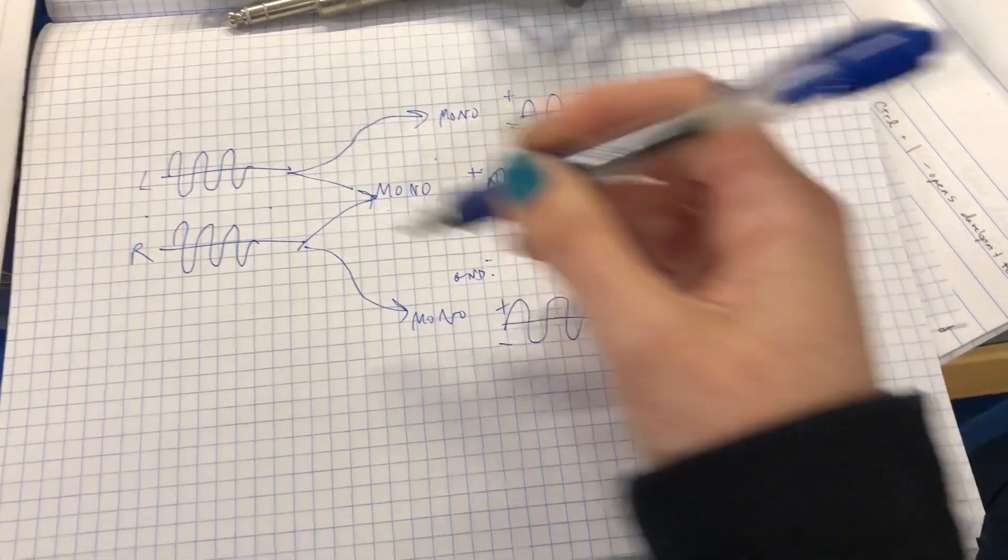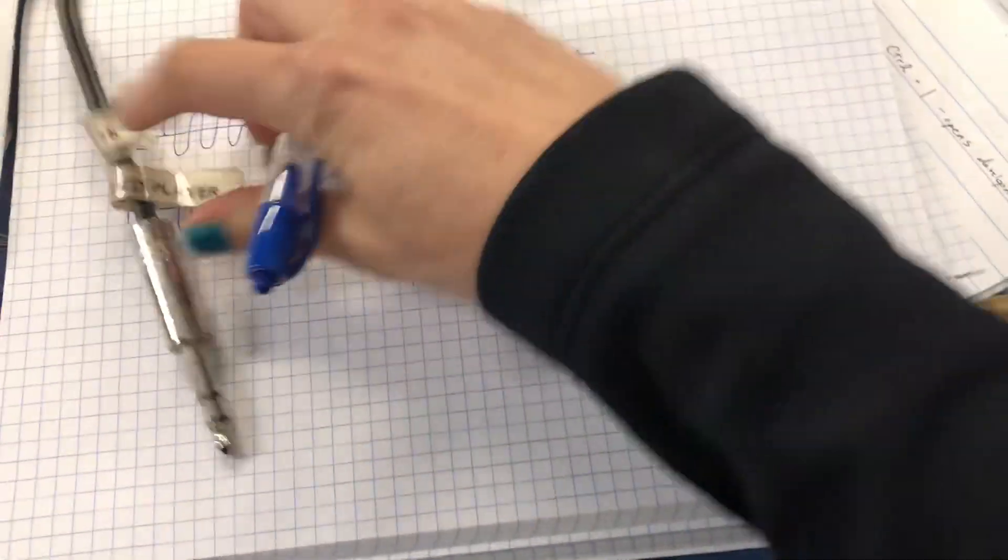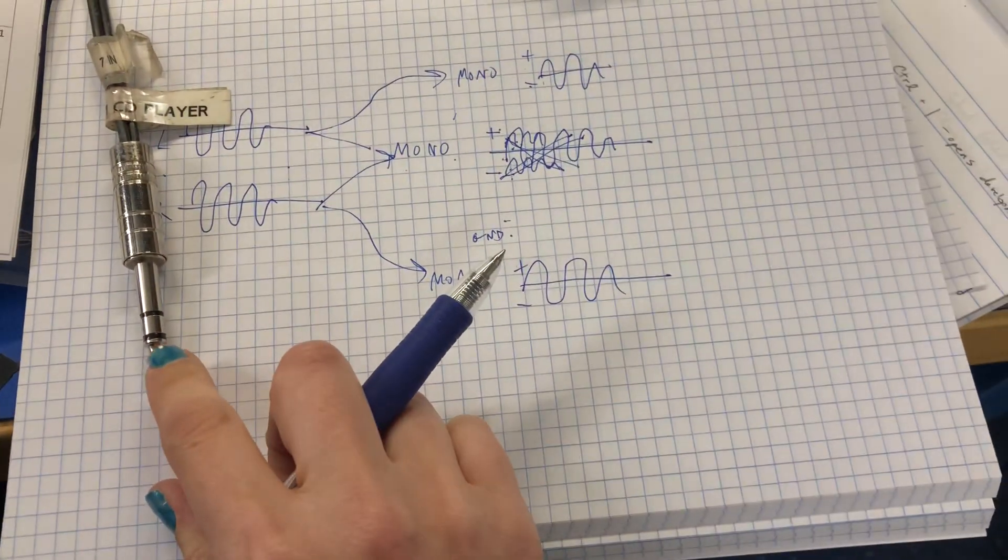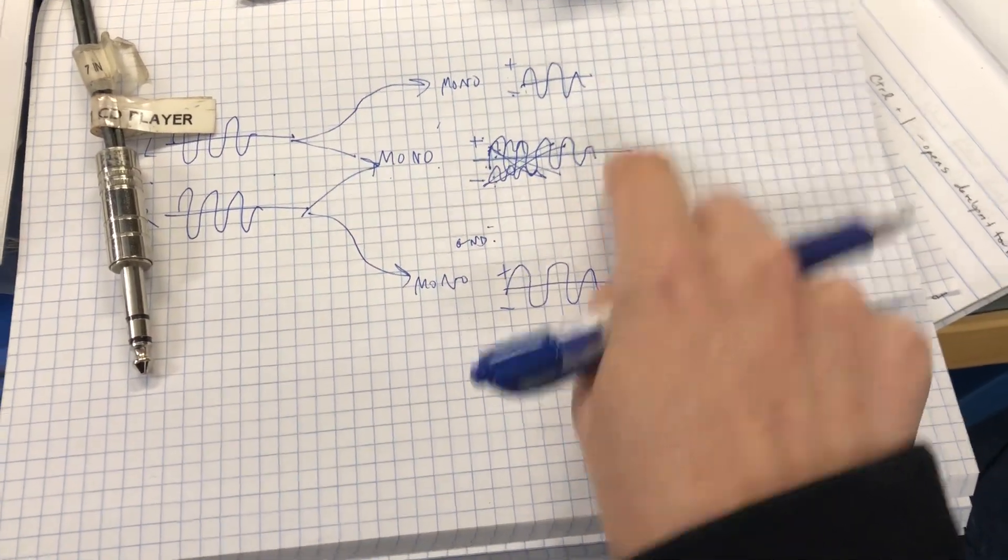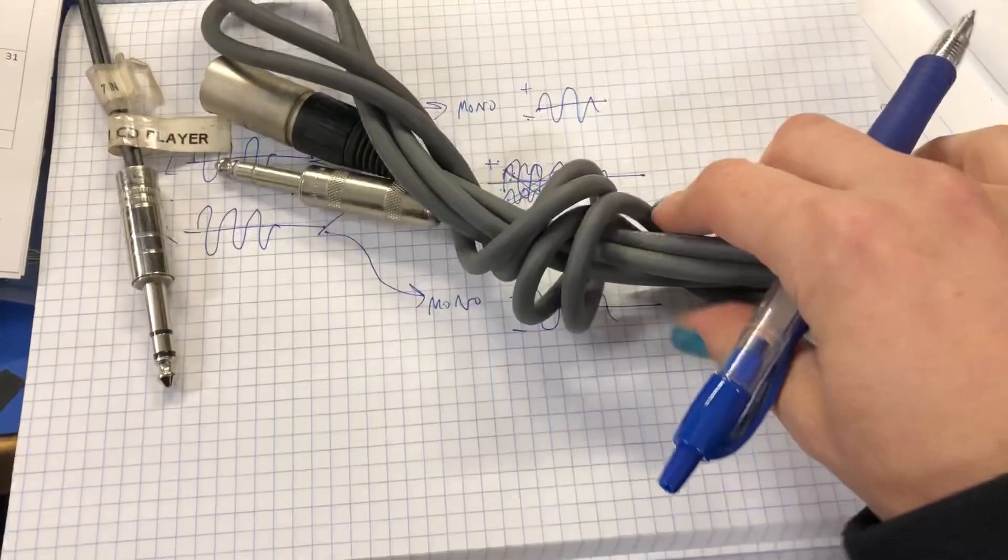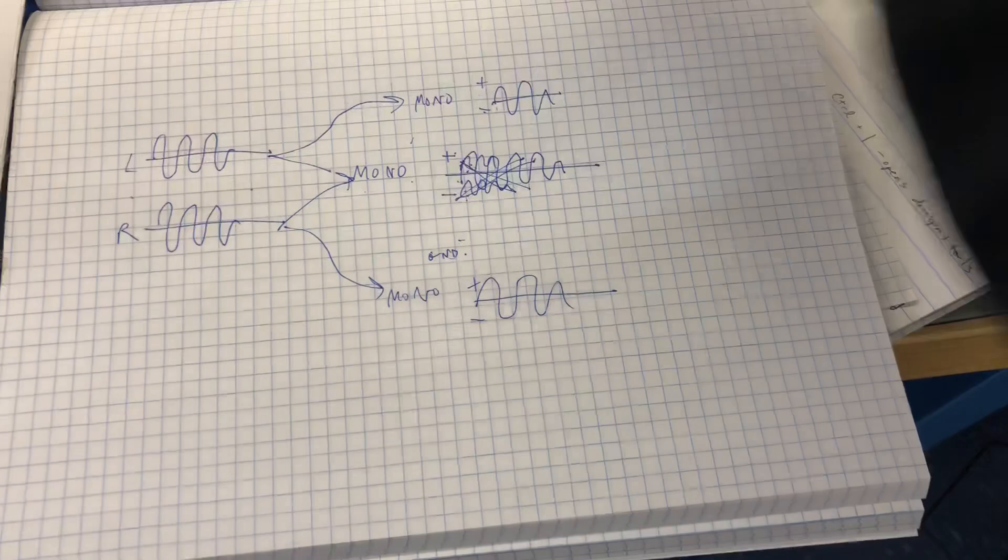And the negative being tied to your ground of this cable. So instead of having your left, right going straight into here, as this cable would do, you would have it running separately. And I will show you what one of these types of cables looks like.